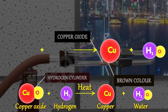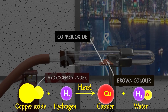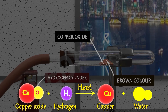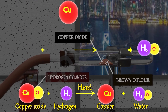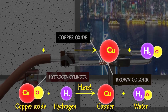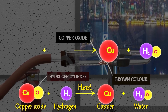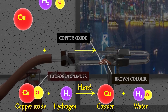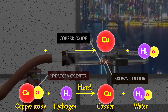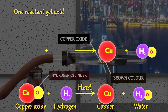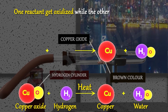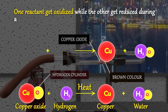So we can say CuO plus H₂ gives Cu plus H₂O. During this reaction, the copper oxide is losing oxygen and is being reduced. The hydrogen is gaining oxygen and is being oxidized. In other words, one reactant gets oxidized while the other gets reduced during a reaction.